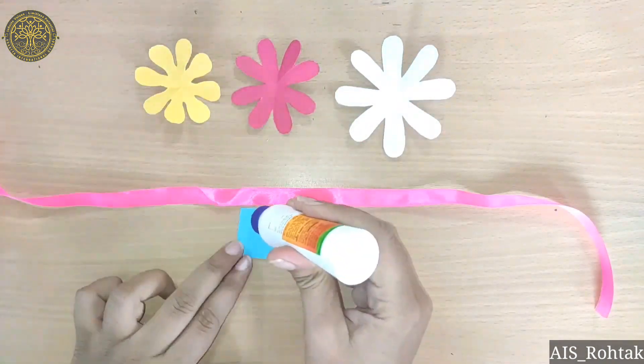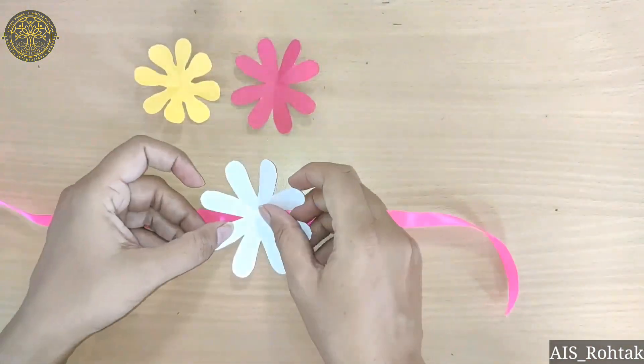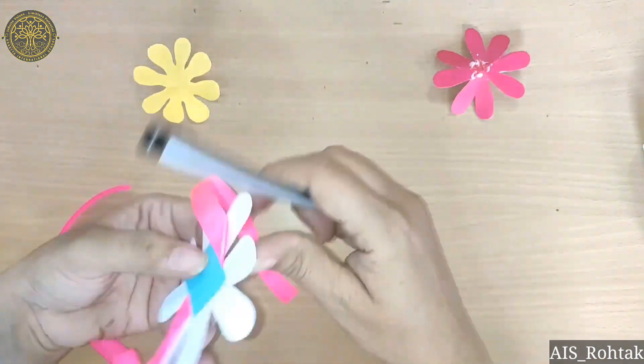Now take a ribbon and one piece of square paper. And we will paste the ribbon. Then we will paste the big flower.